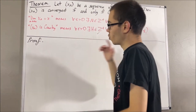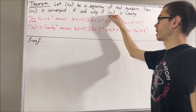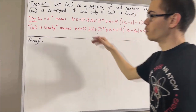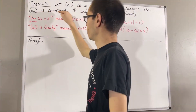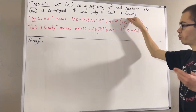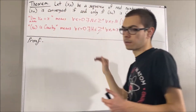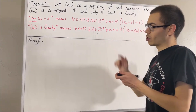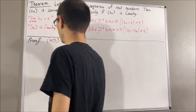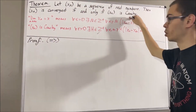Now, we want to prove xn is convergent if and only if xn is Cauchy. To do that, we're first going to prove if xn is convergent, then xn is Cauchy. And then we're going to prove if xn is Cauchy, then xn is convergent. So let's start out with the forward implication: we want to prove if xn is convergent, then xn is Cauchy.